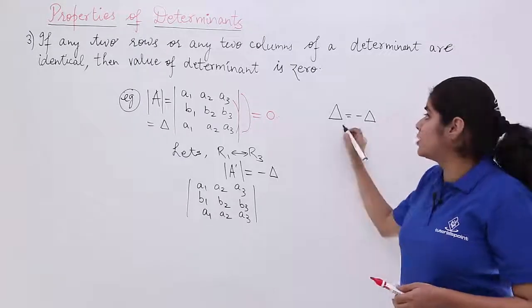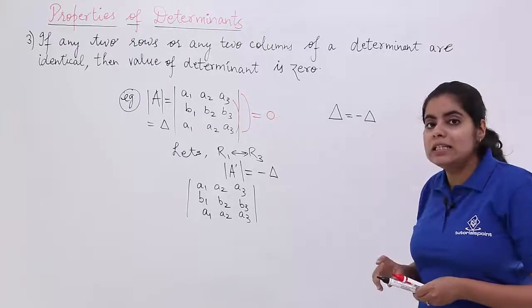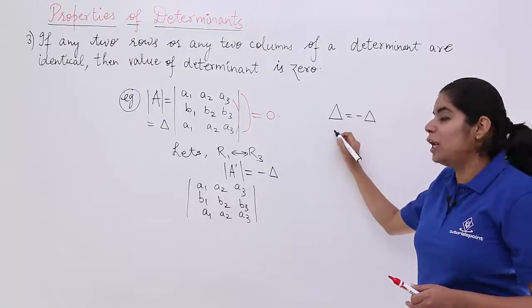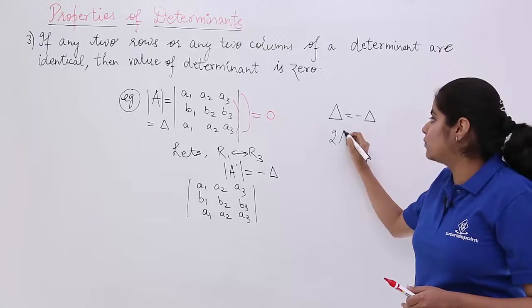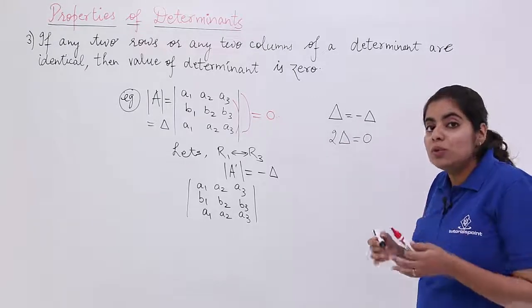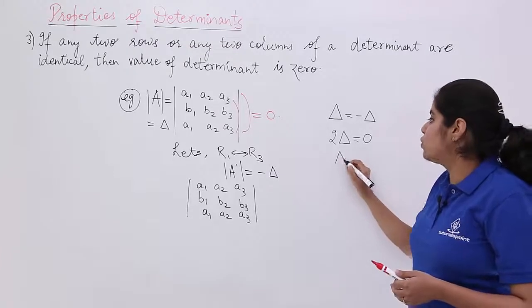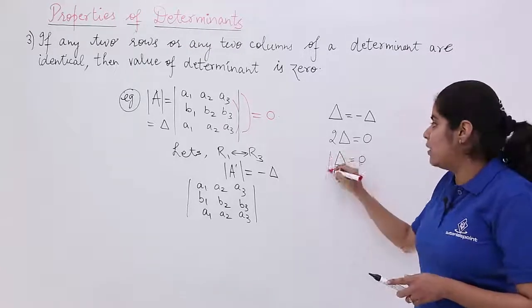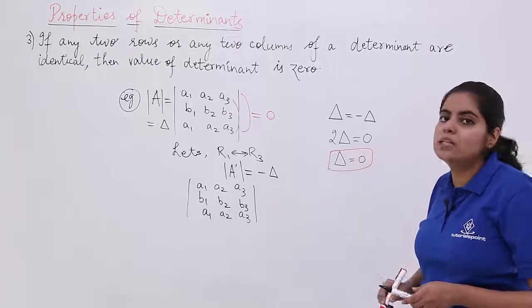And if such thing happens, I can take del to the other side. So this minus del goes to the other side. It becomes del plus del which is 2 del. And here it comes equal to 0. Now, if 2 del equal to 0, that 2 goes to the other side. 0 divided by 2 is 0. So my value of del or the determinant is 0.